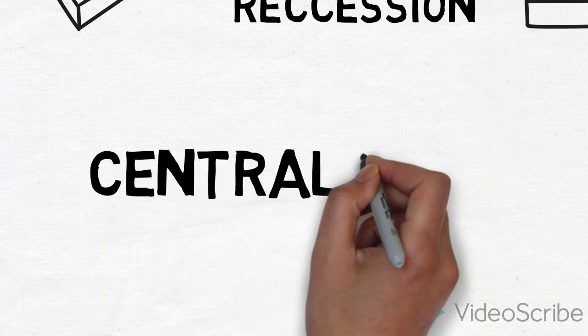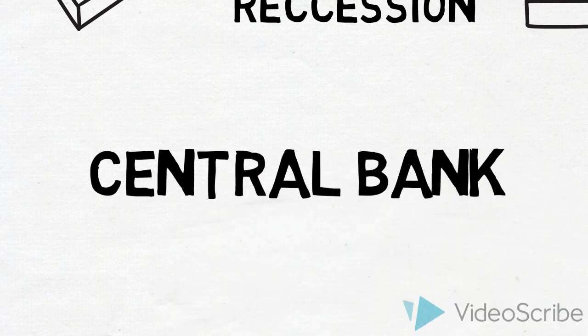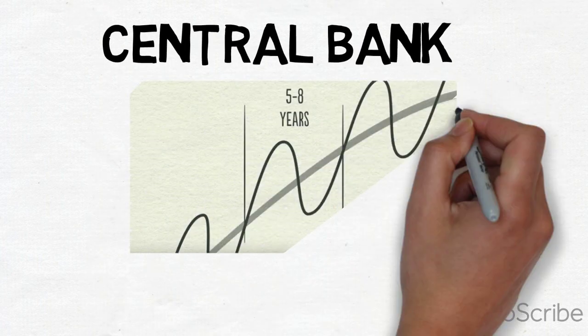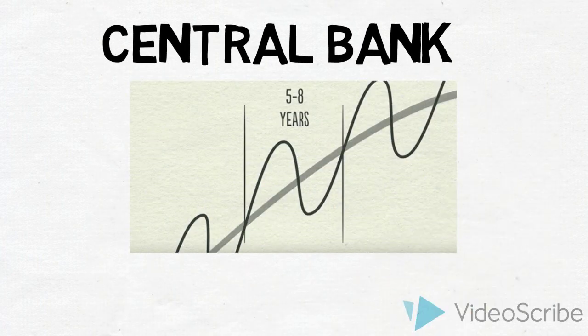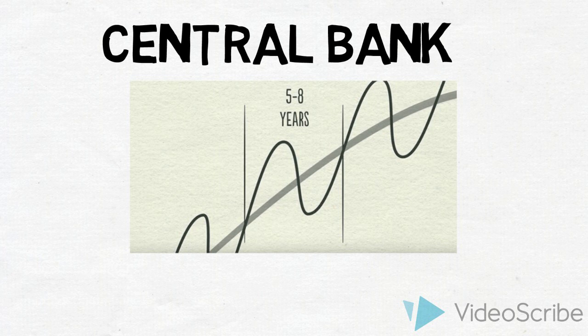Hence, central bank controls the money and credit flow in economy. It is also known as short-term debt cycle, which usually lasts for 5-8 years.